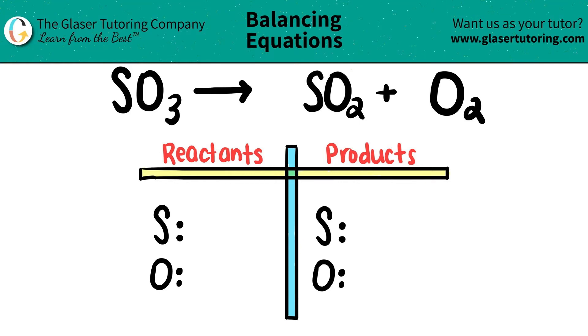Today, we are going to balance the equation of SO3, which will yield or produce SO2 plus O2. I already wrote out our little balancing chart here, which is going to help us out greatly, and the elements that I see on both the left and the right side. Let's write how many of each we have, and then let's start the balancing.